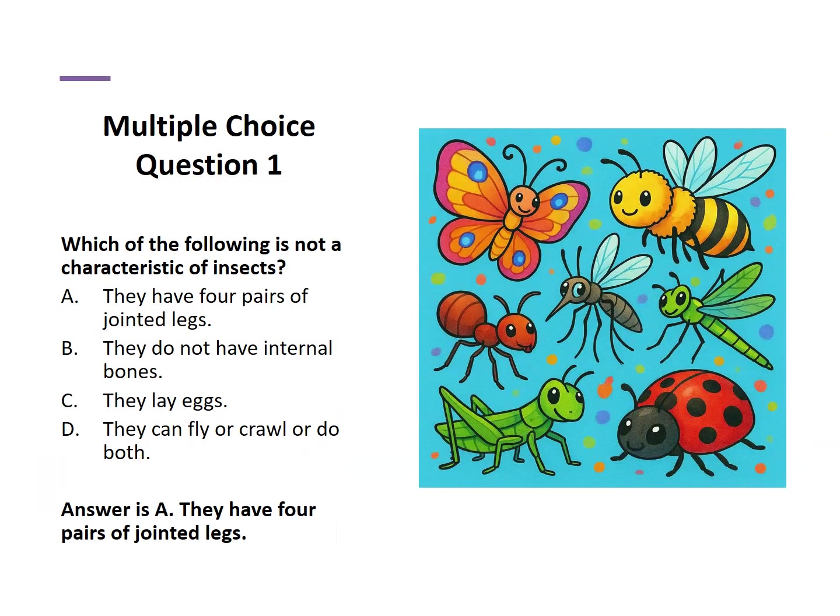Which of the following is not a characteristic of insects? They have four pairs of jointed legs. They do not have internal bones. They lay eggs. They can fly or crawl or do both. The correct answer is A: they have four pairs of jointed legs.